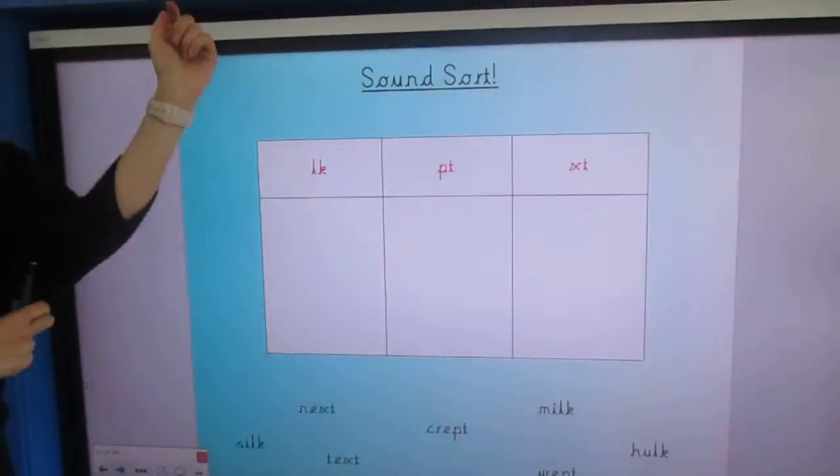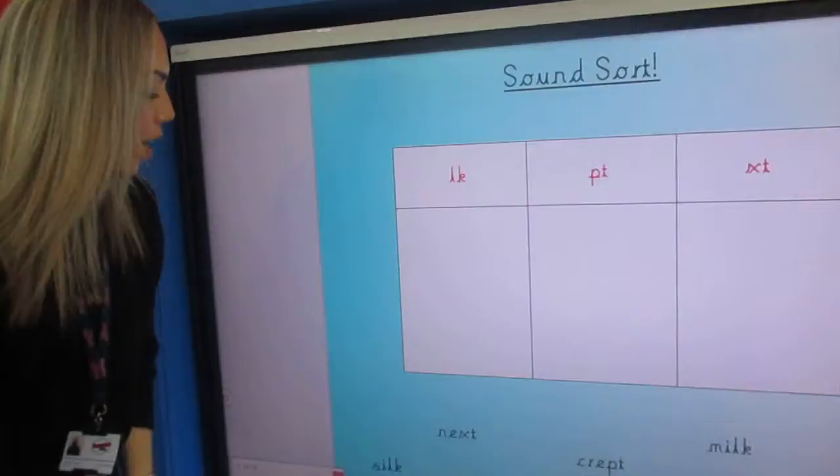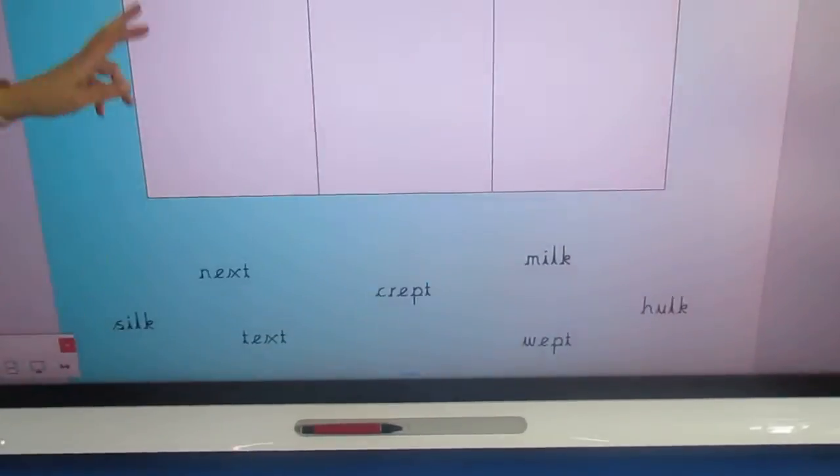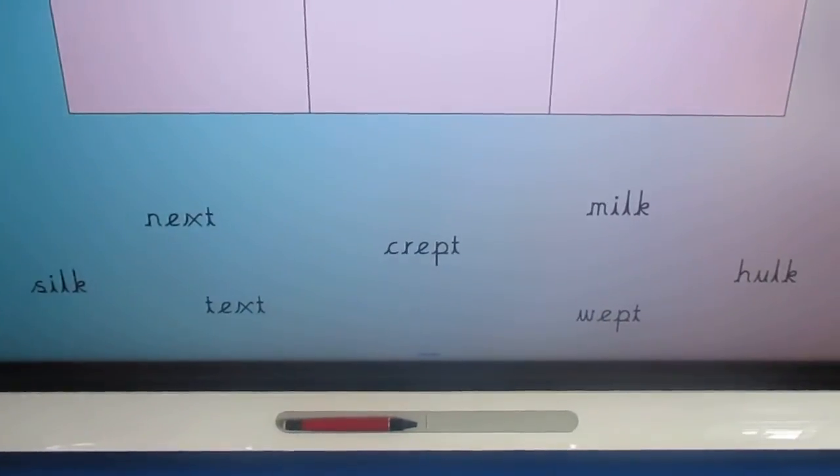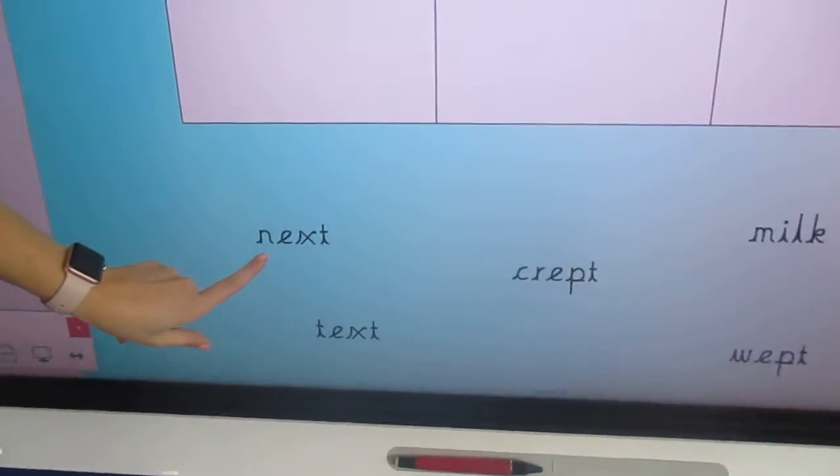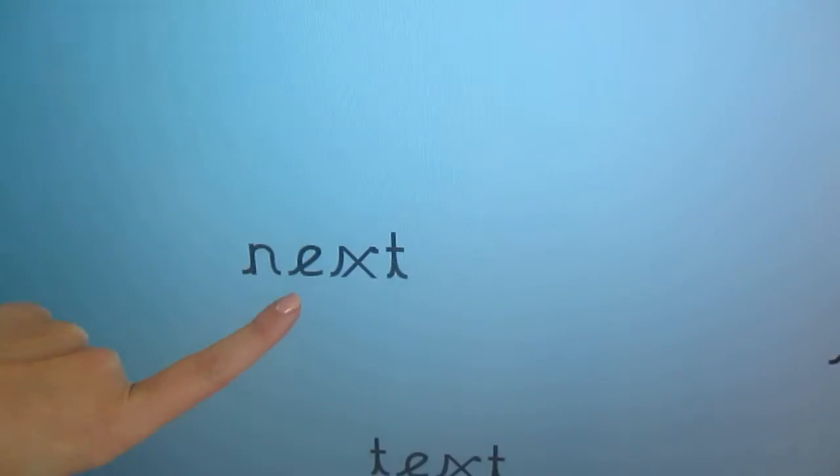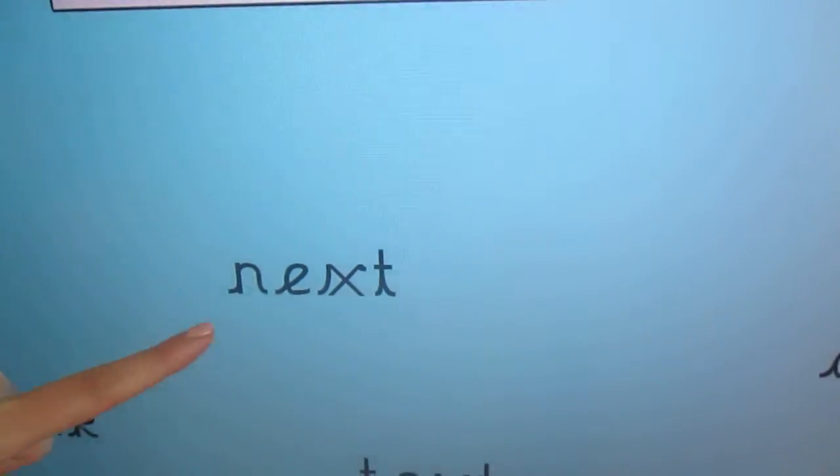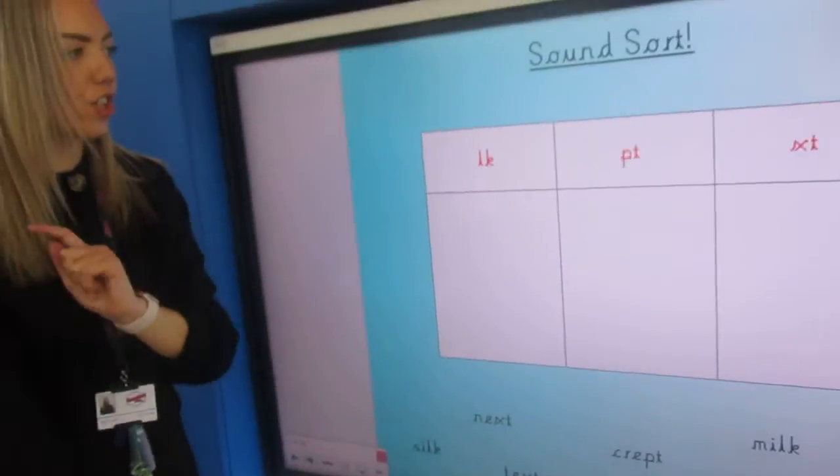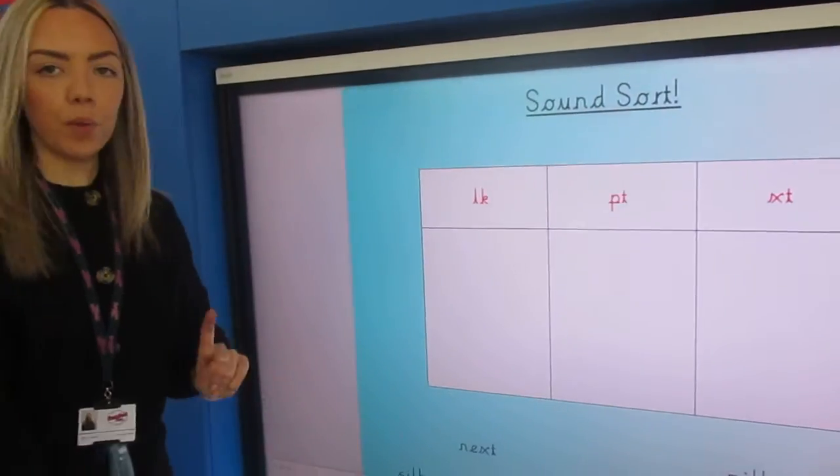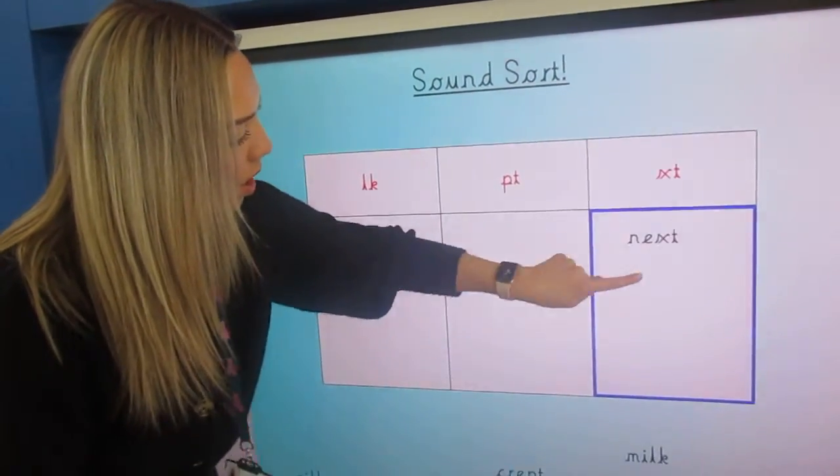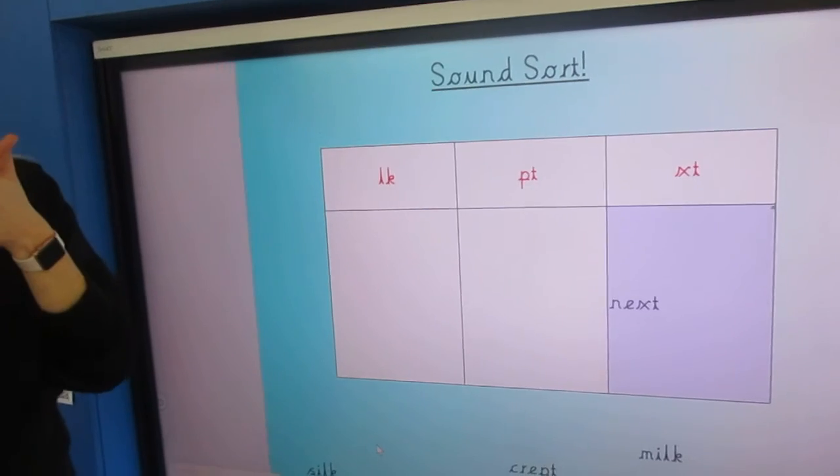So what we're going to do then is still reading. We're going to have a look at our words and we're going to see if we can put them in the right sound. So let's do a few together. Let's do this one first: next. Next. We've read the word and then we're going to pop it into our box. Super job.